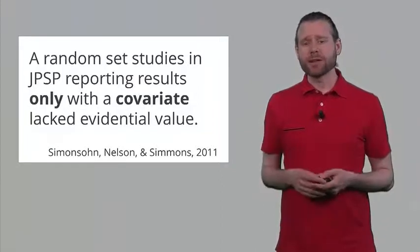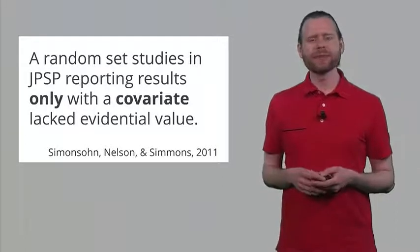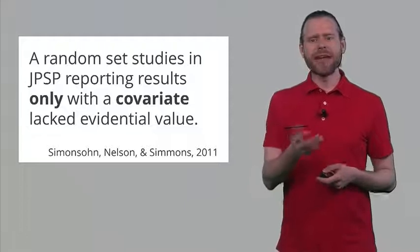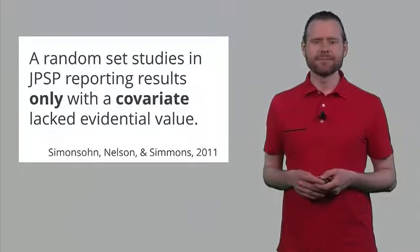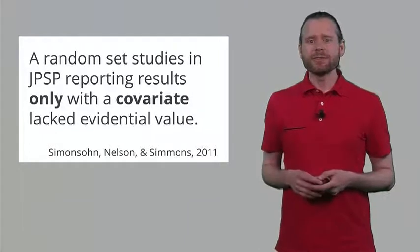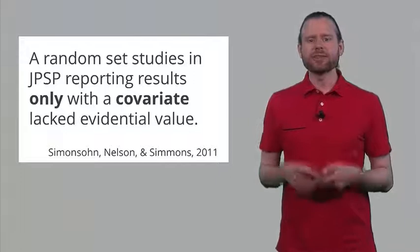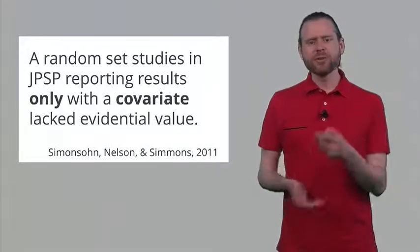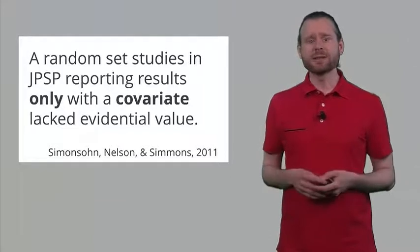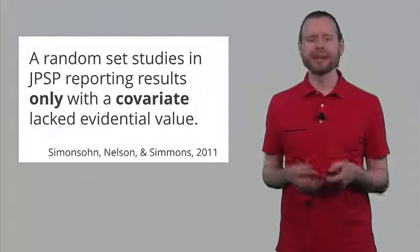So their initial analysis might not show a statistically significant effect, but then they play around with their data just a little bit until adding a covariate would make a statistical analysis significant. So when they look at a set of studies that use covariates, they see that the p-curve analysis shows that these studies actually lack evidential value. So using this flexibility leads to a set of studies in the scientific literature that really don't tell us anything about what's likely to be true.